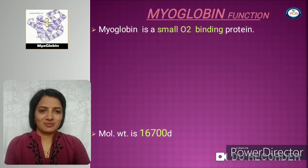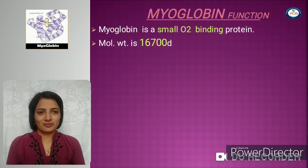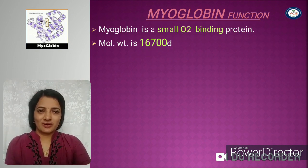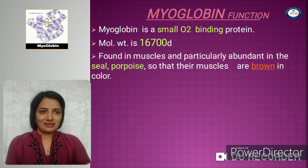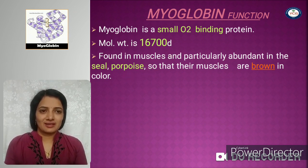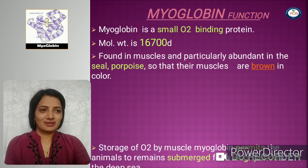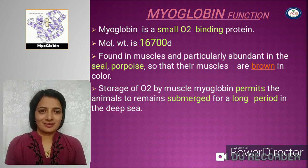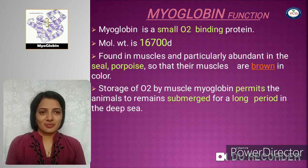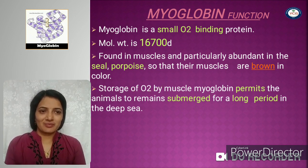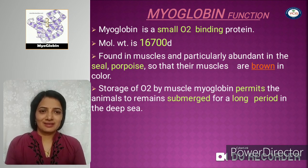Myoglobin is a small oxygen-binding protein with a molecular weight of 16.7 kiloDalton. It is especially abundant in the muscles of seals and porpoises, so that their muscles are deep red or brown in color — sometimes called meat-red color — because of the myoglobin protein. Storage of oxygen by muscle myoglobin permits these sea animals to remain submerged for long periods in the deep sea.